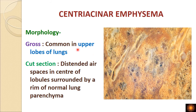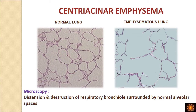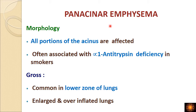Centriacinar emphysema is commonly seen in the upper lobes of the lungs. On cut section, the dilated air spaces are in the center — because the respiratory bronchioles are dilated — surrounded by a rim of normal lung parenchyma, since the alveolar sacs are normal. On microscopy, the dilated air space is surrounded by normal alveolar sacs.